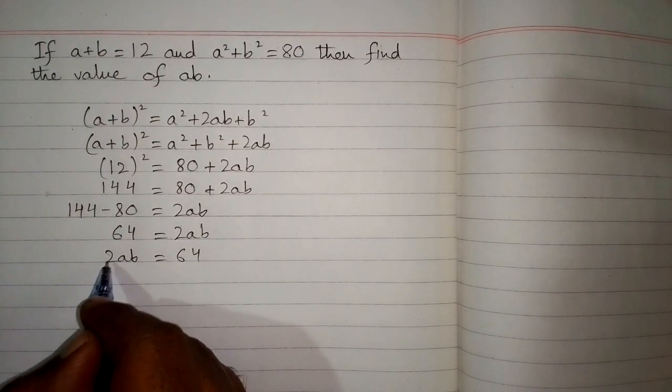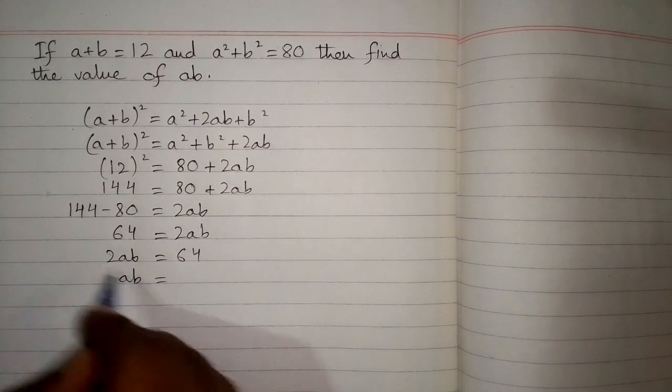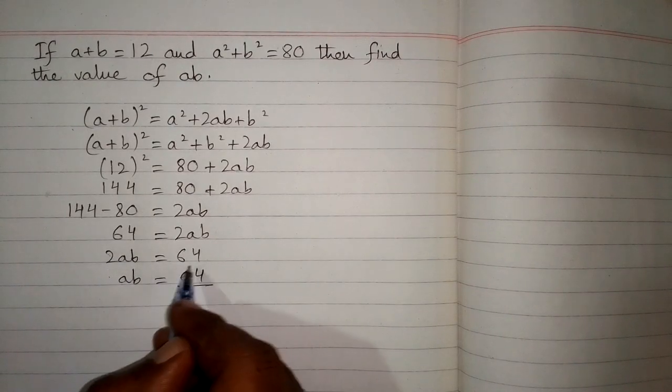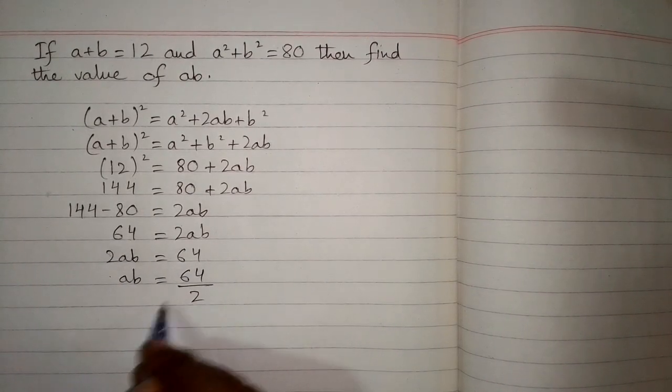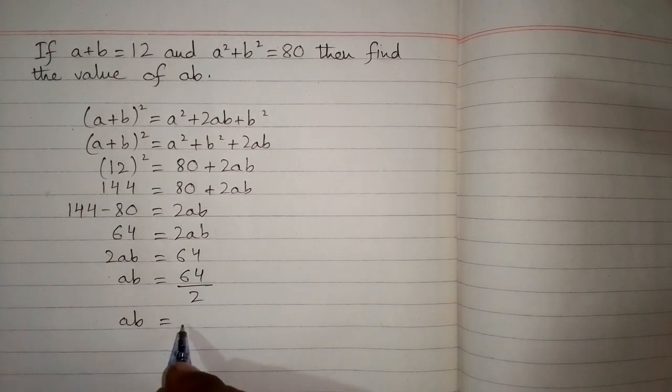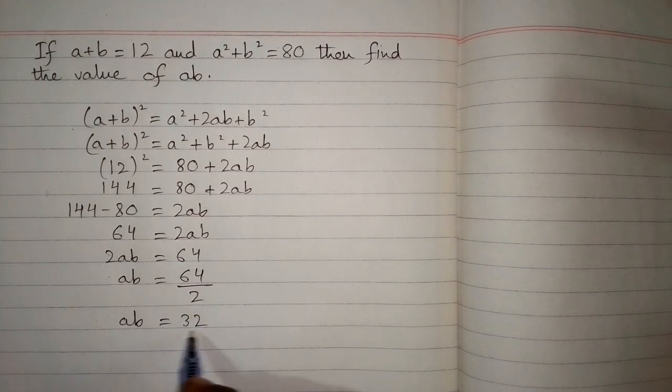Since 2 is multiplying ab, we take 2 to the other side and divide 64 by 2. This gives us ab = 64/2. The value of ab is 32, because 64 divided by 2 is 32.